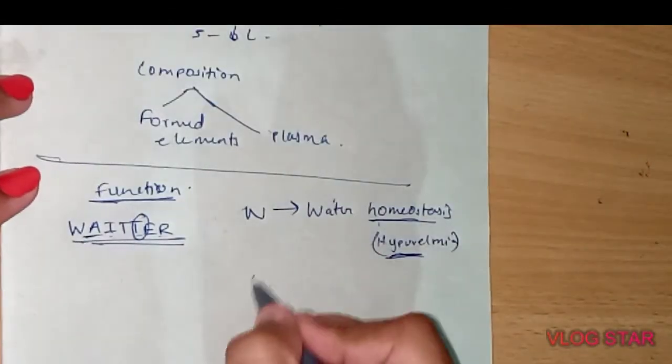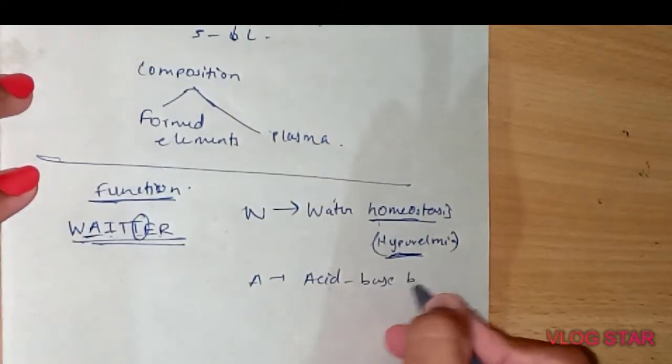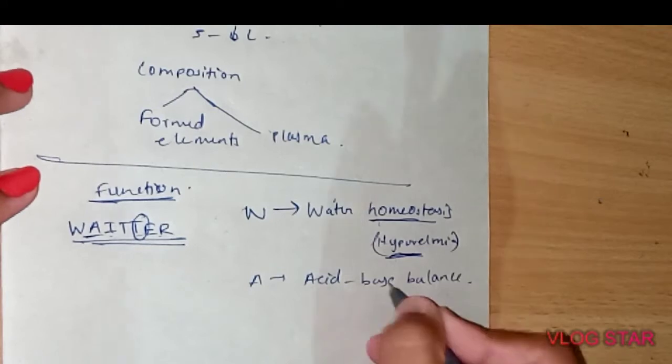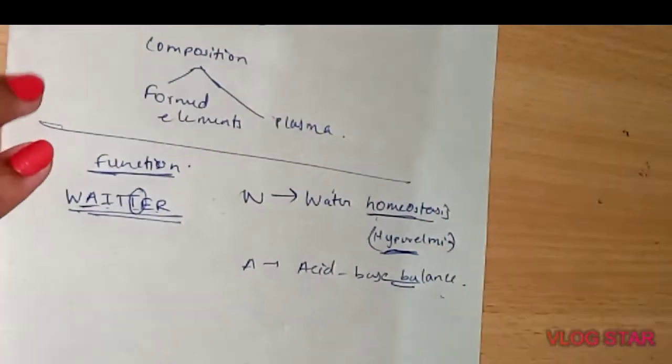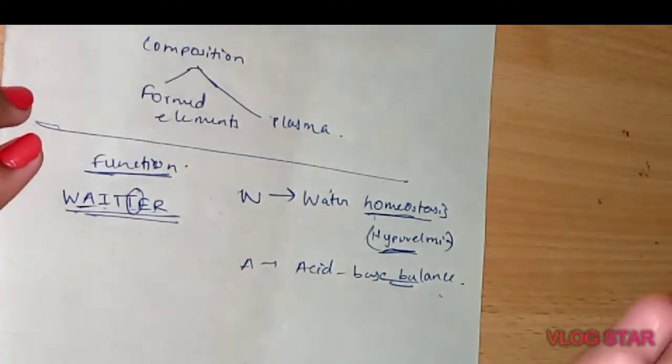A is acid-base balance. Normally blood contains plasma proteins and hemoglobin, so they play an important role in maintaining acid-base balance of the body.